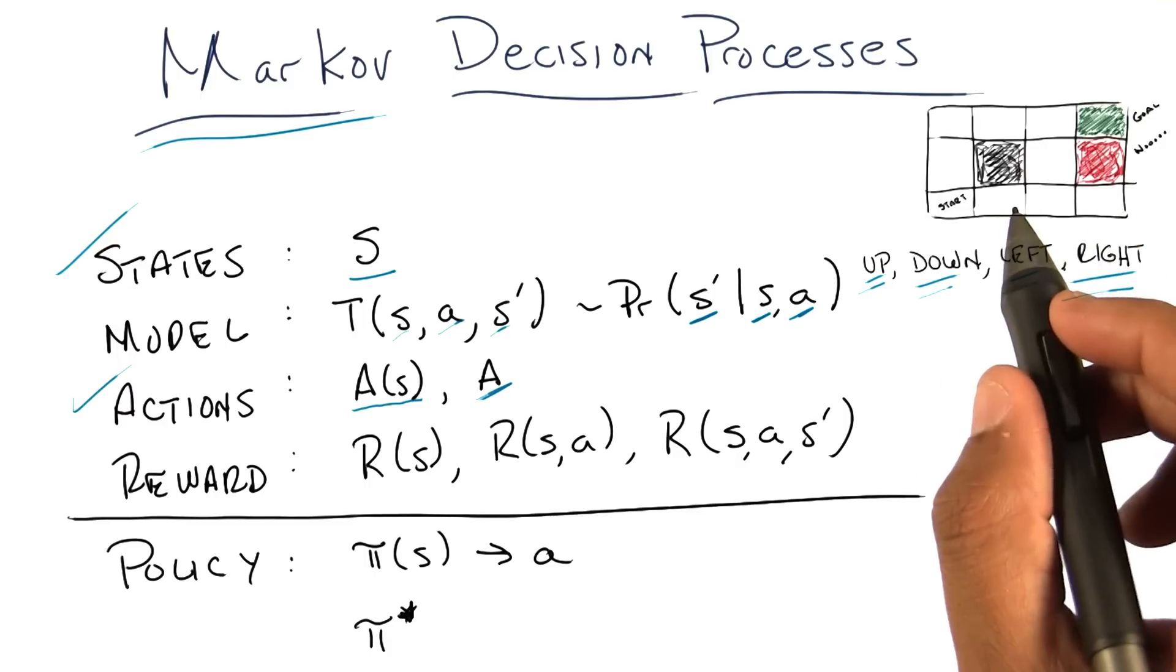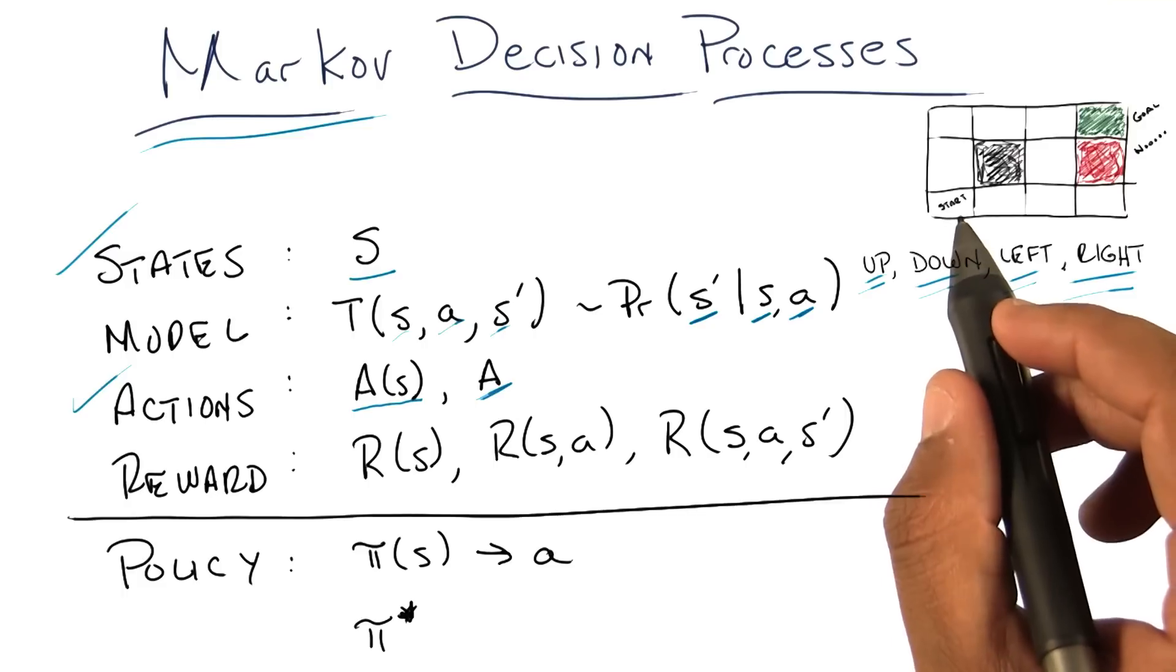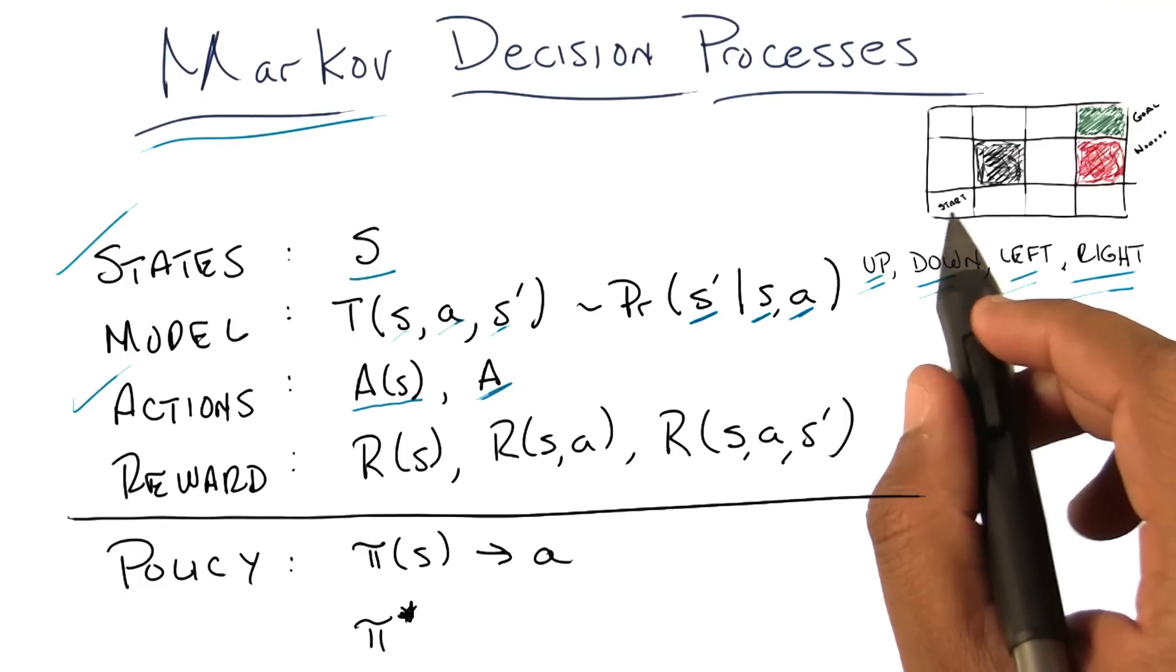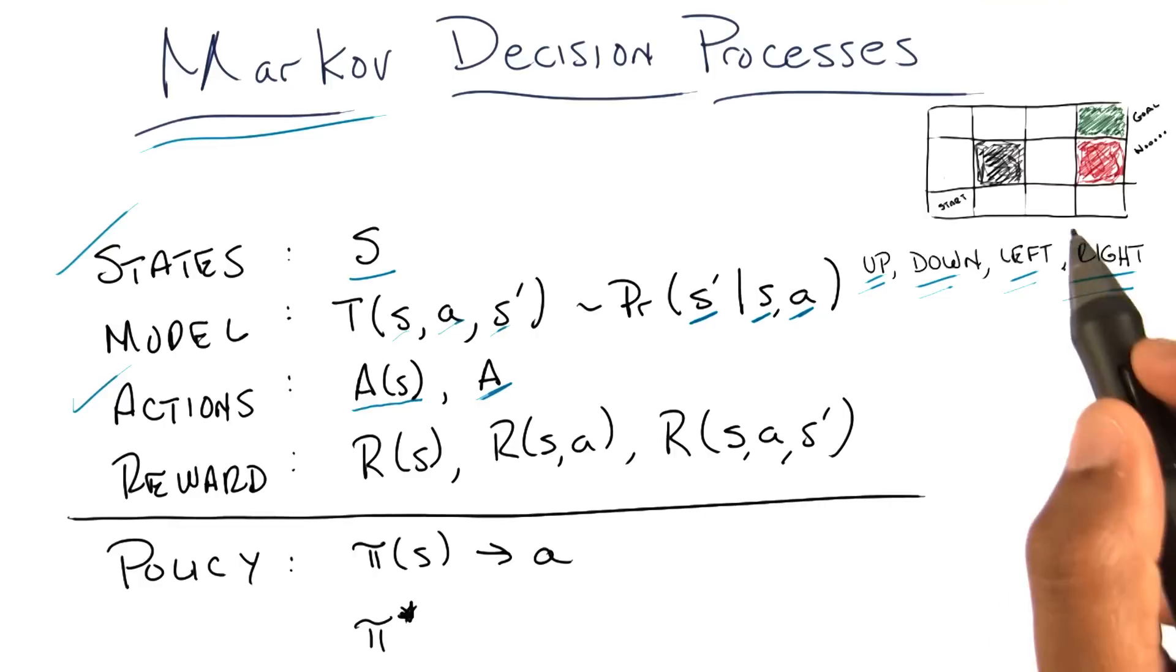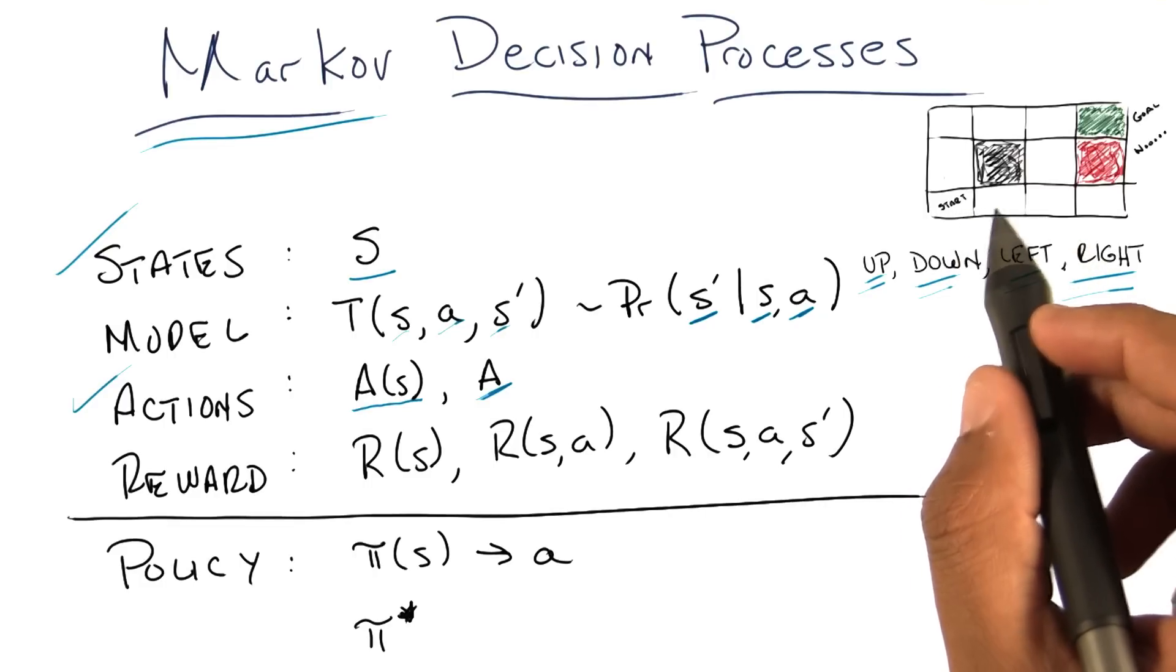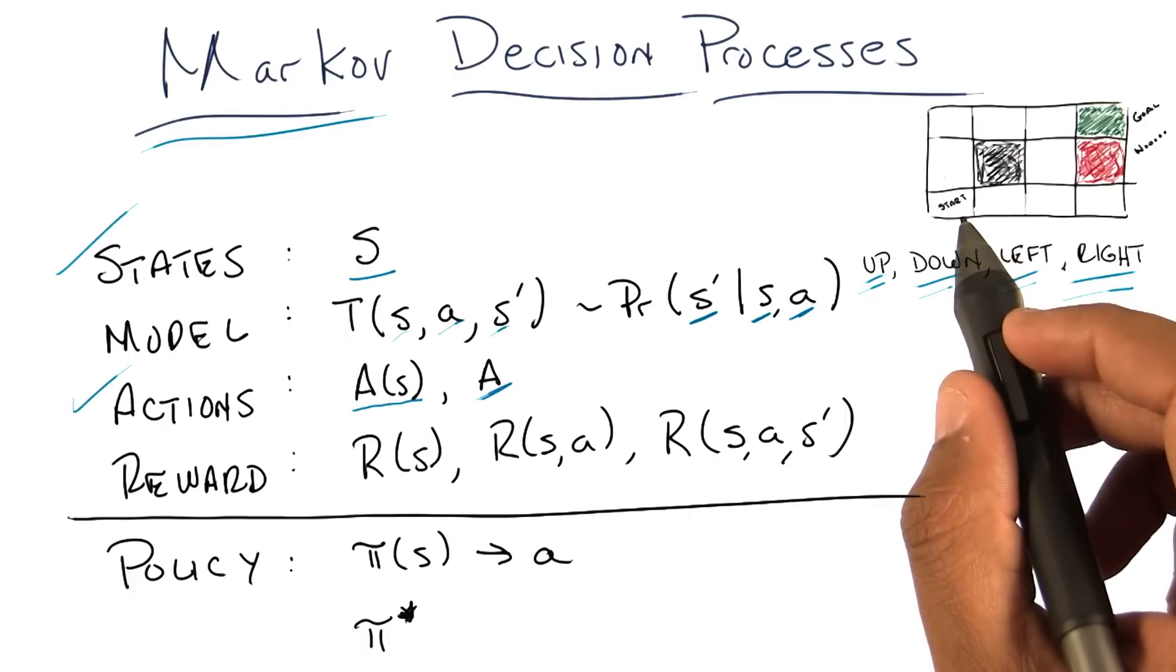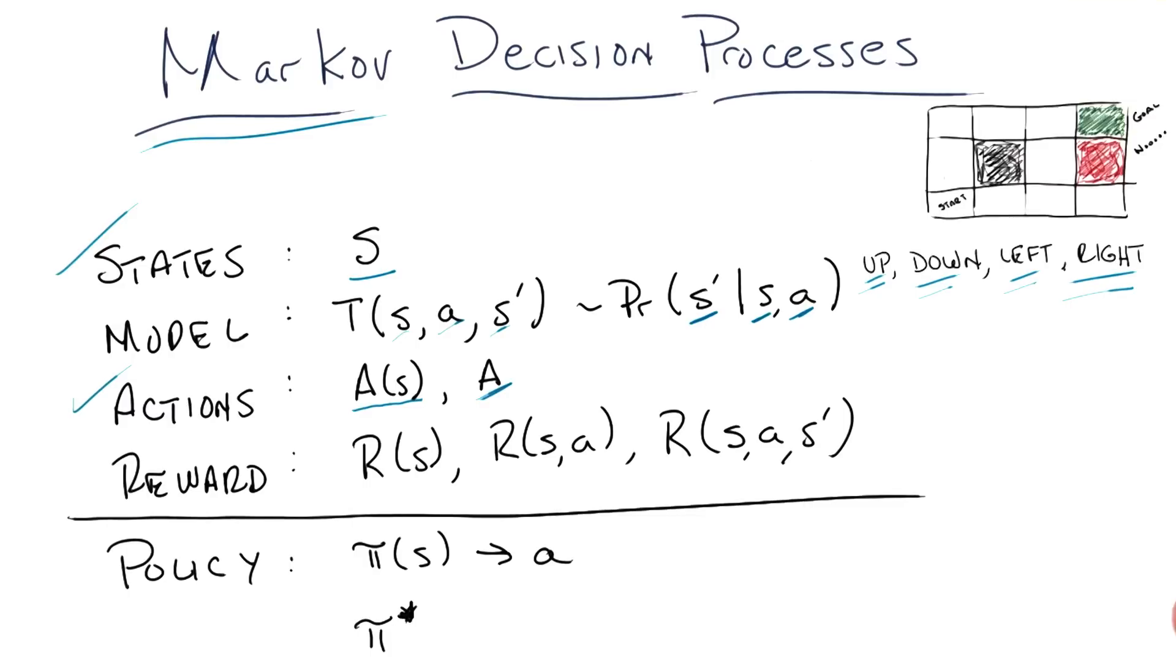Now what about the case when we were in the non-deterministic world where an action would actually execute faithfully only 80% of the time. If I'm in the start state, and I go up, what's the probability that I end up in the state above? That was point eight. Right. What's the probability I end up in the state to the right? That was point one. And what's the probability I end up where I started? That was also point one. Right, and zero everywhere else. And that's just sort of the way that it works.